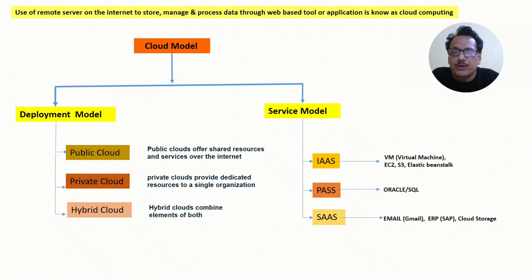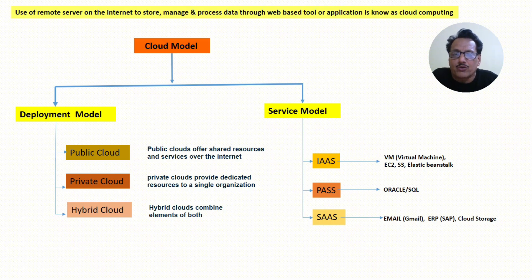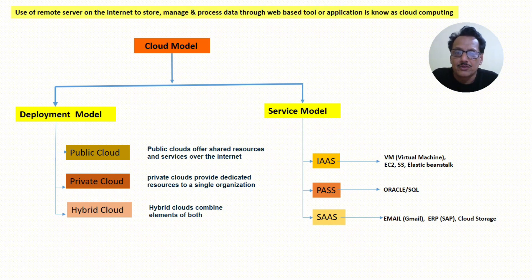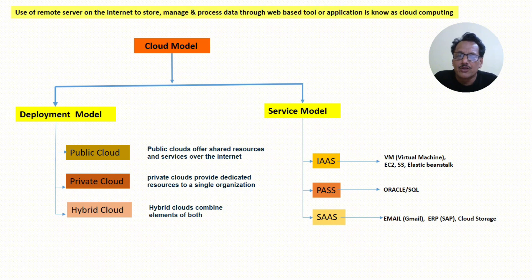Let me explain with an example. Suppose a cloud service provider has one server — the infrastructure hardware. On that remote server, you are installing your virtual machine. So you create one virtual machine, another user creates two or three — this is shared hardware resource for both persons. Multiple people can access that hardware and install their virtual machines. That is a part of public cloud — shared resources over the internet.